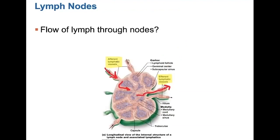Let's look at the flow of lymph through the nodes. Lymph will enter the nodes by way of the afferent lymphatic vessels and move into the subcapsular sinuses. Next, it will flow into the medullary sinuses and out through the efferent lymphatic vessels. Remember, there are more afferent collecting vessels than efferent collecting vessels.